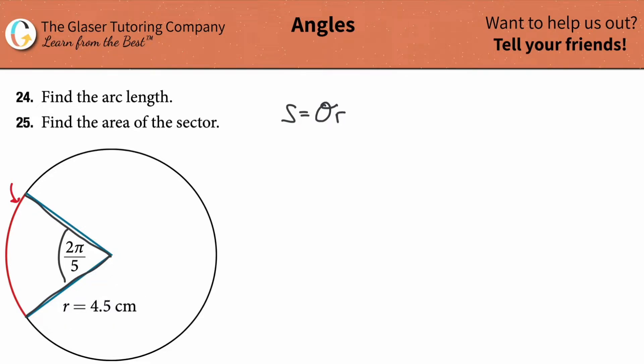So this problem is relatively straightforward. To find that arc length, I need to know the angle measurement in radians, which it is. Anytime you see pi, we can assume it's in terms of radians. So this is then going to be 2π over 5, multiplied by the radius length, which is 4.5 centimeters.